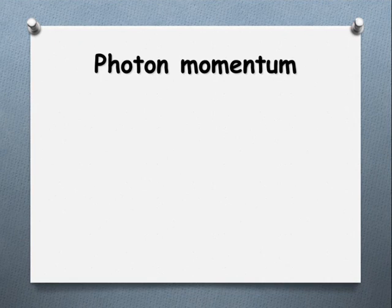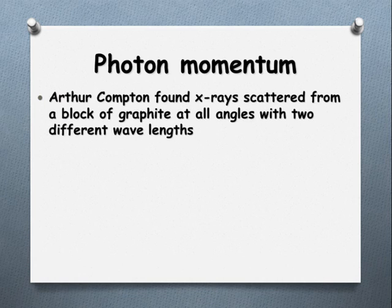So we continue our journey into the dark side of light, looking at the particle model. Now, in 1923, Arthur Compton aimed a beam of monochromatic x-rays at a small block of graphite. What he found was that the x-rays scattered at all angles, but they had two different wavelengths.